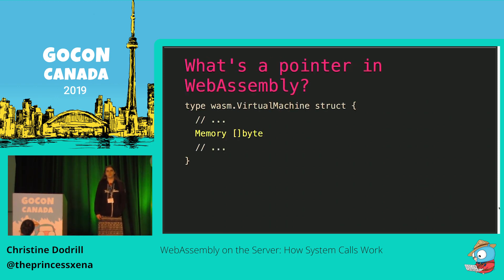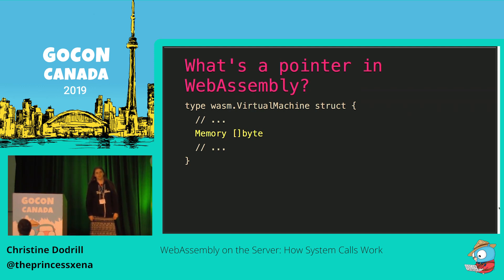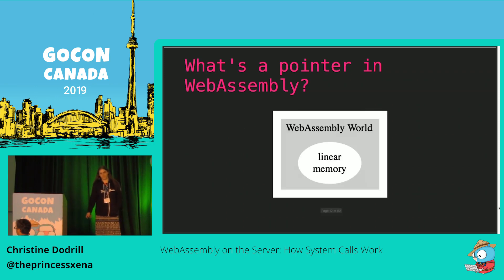When I'm talking about pointers, let's conceptualize a WebAssembly virtual machine as some sort of structure in RAM that has a slice of memory. Pointers are just integer offsets into this slice. This is similar to how Linux works with page tables and whatnot. Pointers are basically just integer offsets into this RAM, and it refers specifically to linear memory from the WebAssembly world diagram from earlier.